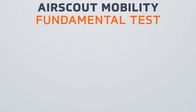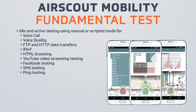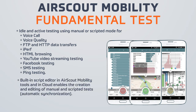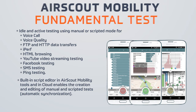The fundamental tests during the walkthrough indicate wireless performance, including voice quality, voice call, etc. Depending on the technology, the tests will differ. All of them are available on a data sheet on our website. The tool also includes a built-in script editor in AirScout Mobility tools that is stored in the cloud and enables the creation and editing of manual and scripted tests.